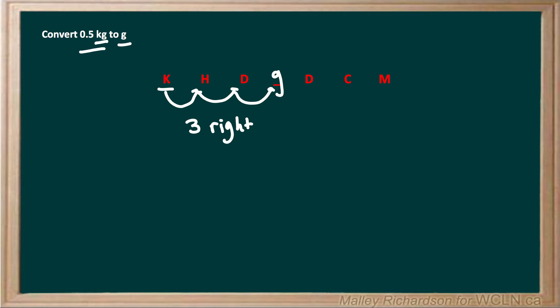So let's apply these jumps to our number of 0.5 kilograms. So we first take our decimal, move it once to the right, twice to the right, and then a third time to the right, and then we fill in these empty jumps with zeros.